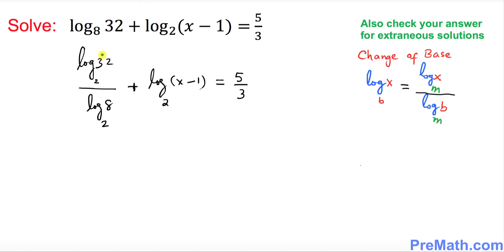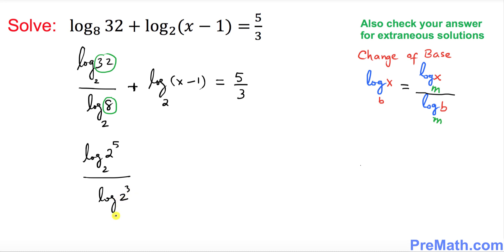Now I want to simplify by looking at 32 and 8. 32 can be written as 2 to the power 5 and 8 can be written as 2 to the power 3. So I write log of 2^5 with base 2, divided by log of 2^3 with base 2, leaving the rest as is, equal to 5 over 3.